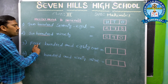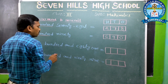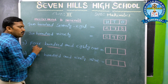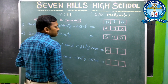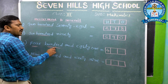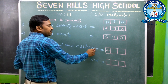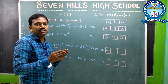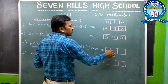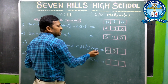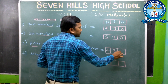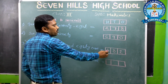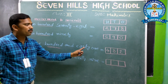Next, 481. How many hundreds is there? 4. So in the 100s place, write 4. 400 and 81 — 80 means 8 tens, so in the 10s place write 8. In the 1s place write 1. So 481 is the number.